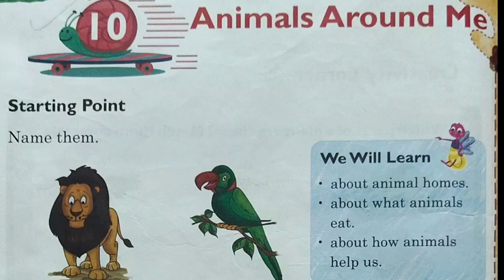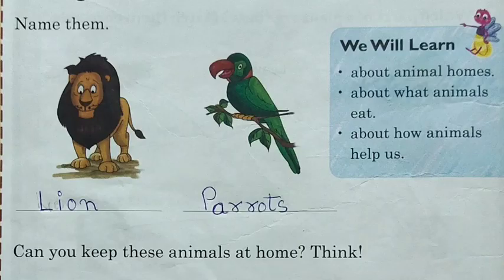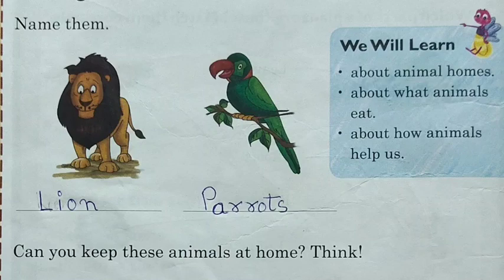I hope you are knowing these two animals. Anyone can tell me the name of these two animals? The first animal is Lion. You have to write Lion in your textbook with the help of a pencil. The spelling of Lion is L-I-O-N. And the second picture is of a bird. Which bird is there? It is a Parrot. P-A-R-R-O-T. Parrot.